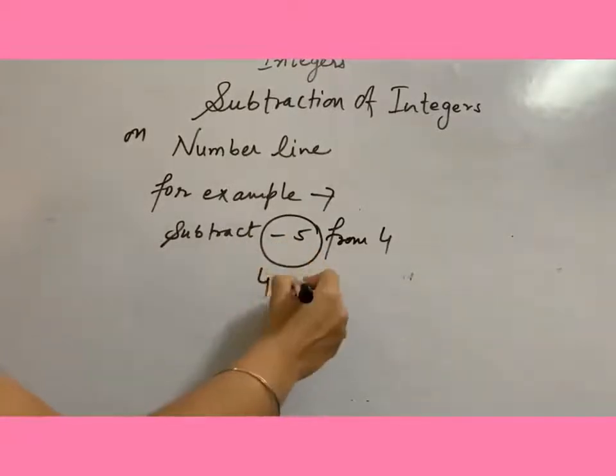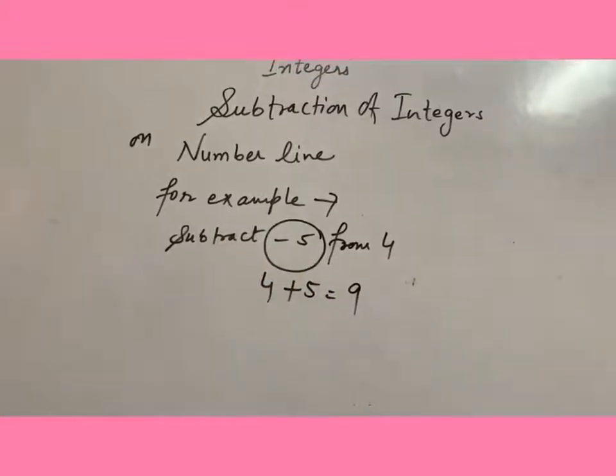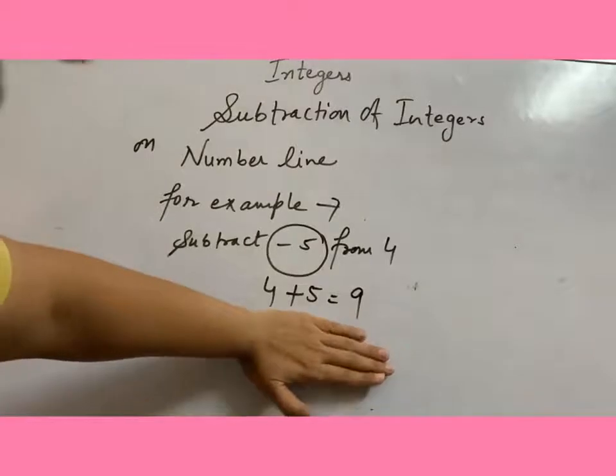So 4, what is the opposite of minus 5? Plus 5. 4 plus 5 equals 9. So now we have to show this operation on number line.